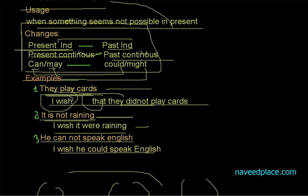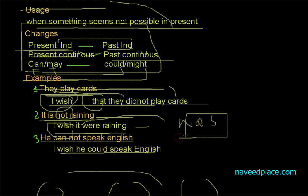One more important thing: whenever the original sentence is in affirmative, we will change it to negative in the wish, and if it is in negative, we will change it to affirmative. For example, 'It is not raining' is negative, so we change it to affirmative: 'I wish it were raining.' I used 'were' instead of 'was' — you can use 'was', but it is more formal to use 'were'. For 'He cannot speak English', 'cannot' is negative, so we change it to affirmative with 'could': 'I wish he could speak English.'